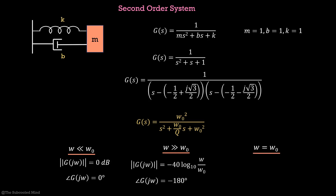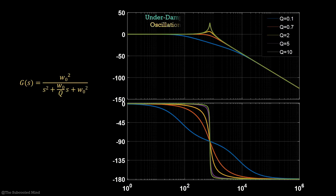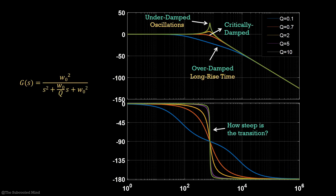But what happens at ω equal to ω₀? We get a gain of Q, or Q in decibels, and this Q can take any value. For very high values of Q, the system has high oscillations, resonance, and overshoot. At Q equal to 0.7, we have the critically damped case, meaning the fastest response without overshoot. For Q less than that, we get the overdamped case, which means a long rise time. For the phase plot, the Q value determines how steep the transition from 0 to −180 degrees is. In summary, a second-order system rolls off at −40 dB per decade, the response depends on Q, and the phase changes by 180 degrees.